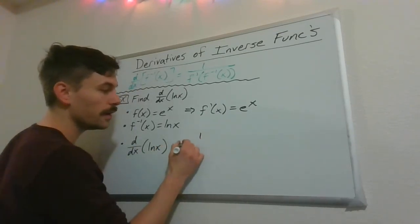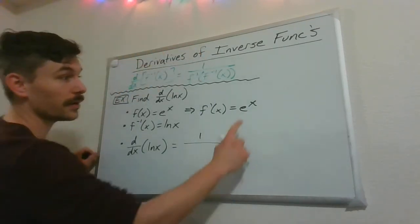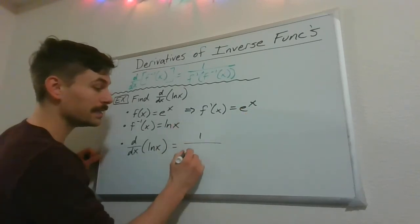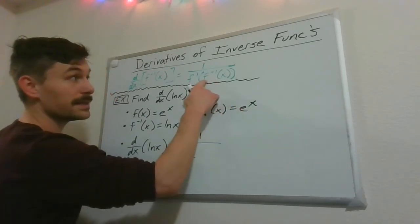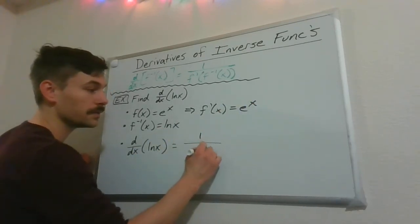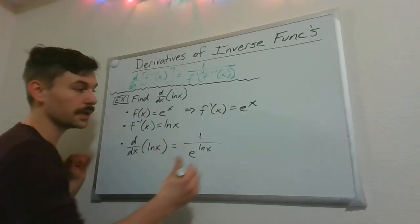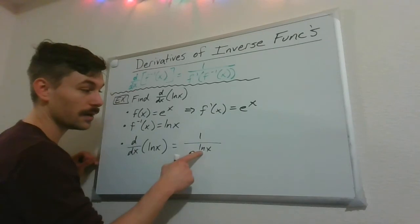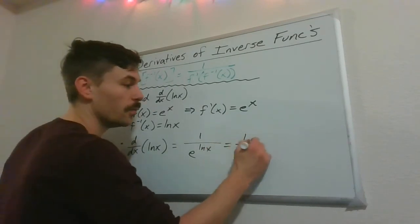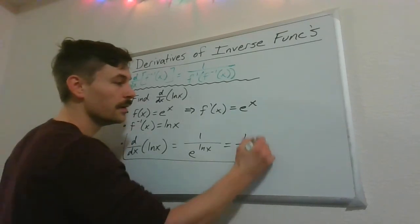Going back to the general formula, log of x is our inverse function, so the derivative looks like one over f prime of f inverse of x. Here f prime of x is e to the x, but instead of just x we plug in the inverse function, giving us e to the power of natural log of x. We can simplify this: since e to the x and log of x are inverse functions, they cancel, and we simply get one over x, which is a pretty nice derivative.